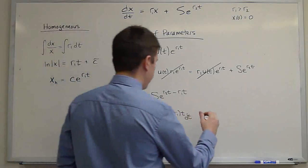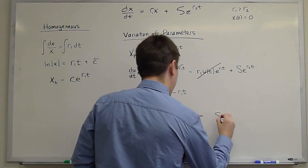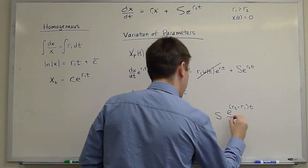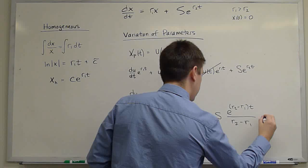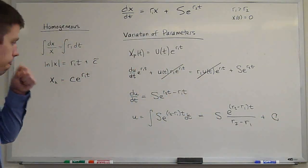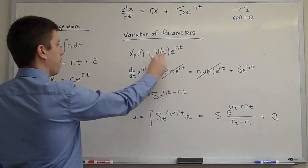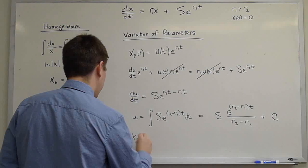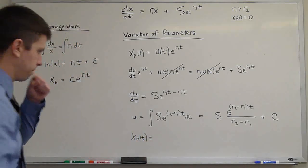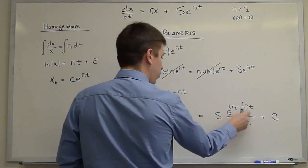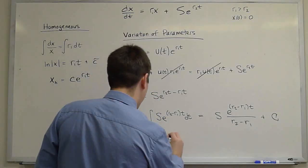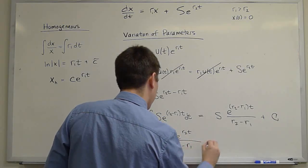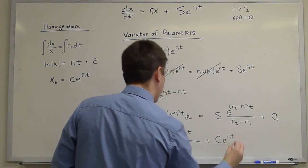This is a straightforward exponential integral, which is s*e^((r2-r1)*t)/(r2-r1) plus a constant. And if we then take this solution for u, multiply it by the homogeneous solution e^(r1*t), we find x(t) is, multiplying through by e^(r1*t), here we will cancel that term. We have s*e^(r2*t)/(r2-r1) plus c*e^(r1*t).